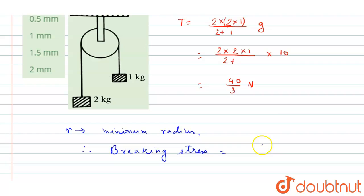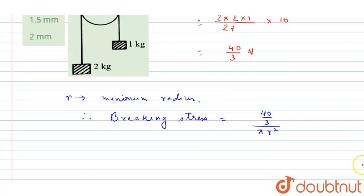This tension, 40 by 3, divided by area π r square. Area is π r square. So now in the question it...